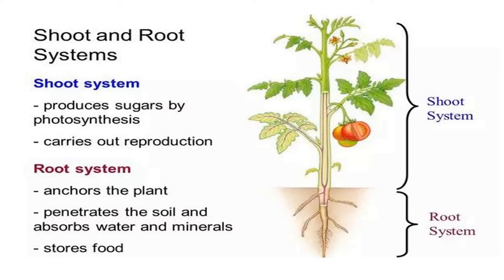As you can see in this picture, the part that is above the ground is the shoot system, and the part that is below the ground is the root system. So students, we can also say that the part of the plant above the soil that we can see is the shoot system, and the part under the soil that we cannot see is the root system.